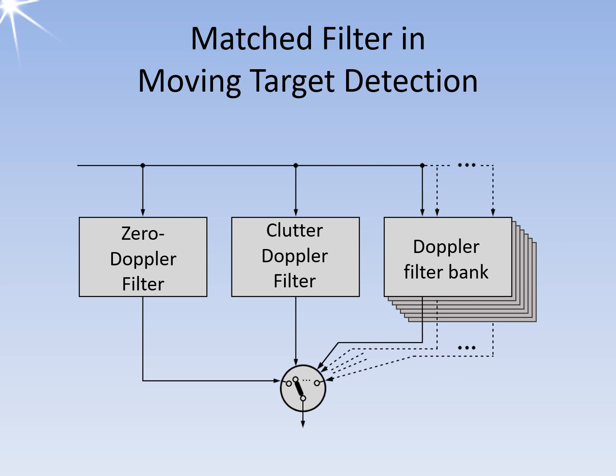The Clutter Doppler filter also has low-pass behavior but with further limits. It is designed to filter echo signals from weather clutter moving at wind speed.